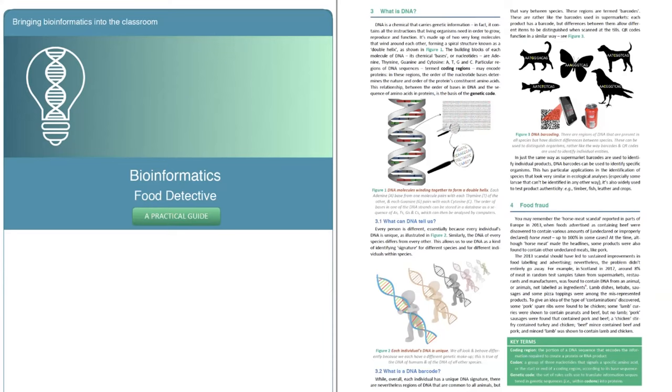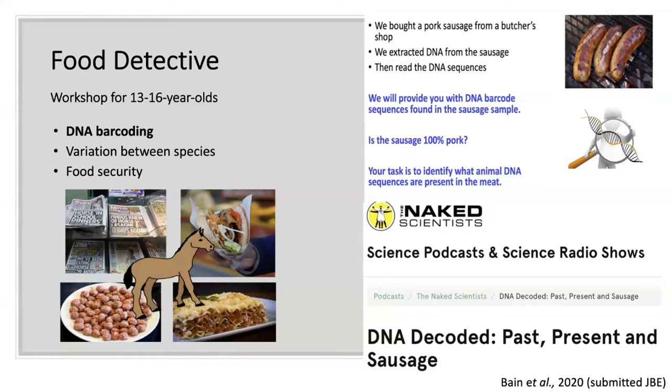We don't do any coding work in terms of the Raspberry Pi element with this age group. What we do is give them the sequences from the pork sausage and they use BLAST on the web browser to identify what species are in the sausage. Bioinformatics isn't on the curriculum at this stage but DNA certainly is, and understanding what DNA is, what information we can get from DNA, and that there's variation between species.